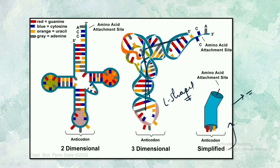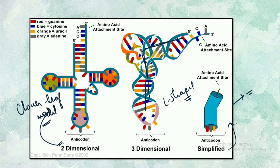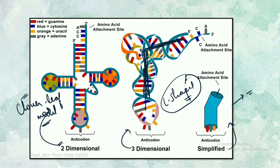If we look at the 2D structure of tRNA, it is given the name of the cloverleaf model, because it looks like a clover leaf. Make sure you remember this name. Then we have the 3D structure, which is given the name L-shaped or inverted-L shaped, because it occupies the shape of an L as you can see in the figure. There is also a simplified loop representation. The most important one is the cloverleaf model, as many questions have come from this.